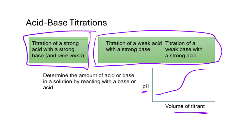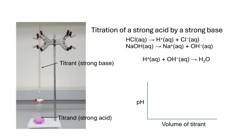What kinds of things does that tell us? Number one, it can tell us an equivalence point or an end point for a titration, from which we can determine a number of things, including concentration of titrant. We can sometimes determine the identity of an acid or a base. There are many applications of titrations.